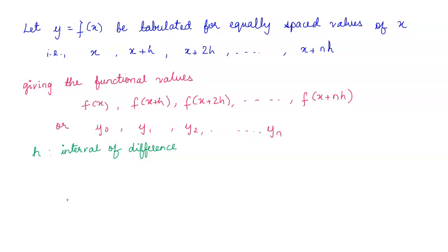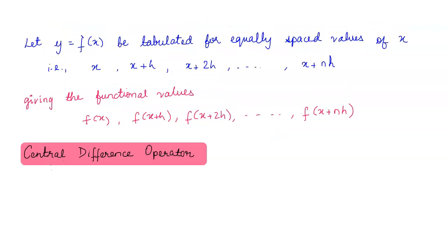To understand the concept of these two operators, we shall say that y equals f(x) is the function tabulated for equally spaced values of x. The equally spaced values are x, x plus h, x plus 2h, up till x plus nh, which give the functional values f(x), f(x+h), up till f(x+nh), or equivalently y₀, y₁, y₂ up till yₙ. Here h is the interval of difference, that is, the common difference between two consecutive values of x.